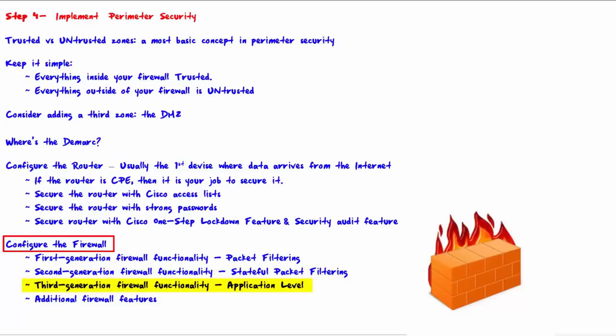Third-generation firewall functionality is application-level filtering, which occurs at layers 1, 2, 3, 4, and 7. The addition of layer 7 — the application layer — allows deep packet inspection. This lets you filter by specific criteria for specific applications such as HTTP, HTTPS, FTP, DNS, etc., giving you extremely fine control. The exact degree of fine control depends upon the specific abilities of the firewall you're using.